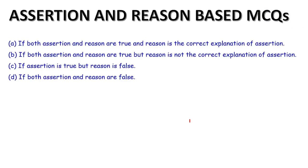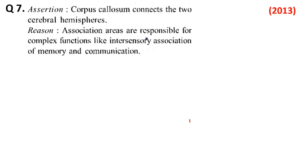Assertion और reason में 2013 में question पूछा हुआ है। Assertion: Corpus callosum connects the two cerebral hemispheres — यह बिल्कुल सही है। Reason: Association areas are responsible for complex functions like inter-sensory association of memory and communication — यह भी सही है। Assertion भी सही है, reason भी सही है, लेकिन यह reason corpus callosum का correct explanation नहीं है — वो उसका function है। तो option B right होगा।